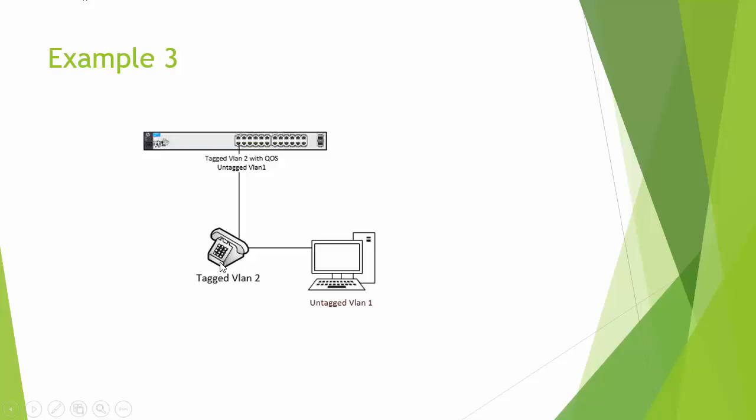The final example before the practical — a computer daisy-chained with a phone. The port on the switch will be tagged with VLAN 2 for the phone and untagged on VLAN 1 for the computer. The computer needs no configuration because it's untagged. The phone will need configuration, either by setting the IP address statically or by using a fancy DHCP setup.